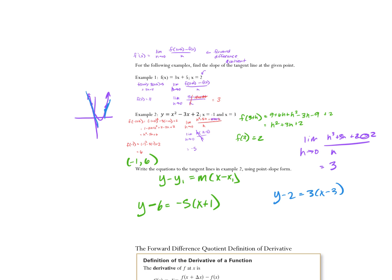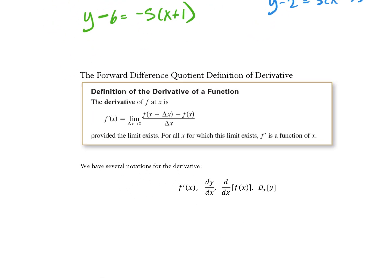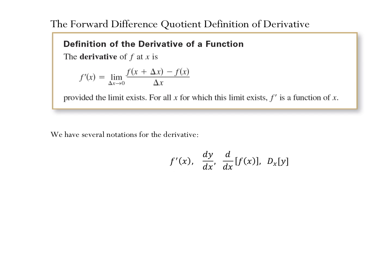What we're going to do next is instead of investigating at specific x values, we're going to come up with an equation that models all of the different slopes. On the test, I give you the forward difference quotient with h instead of delta x. Are you good with this notation, this notation, and this notation? They all mean the same thing.